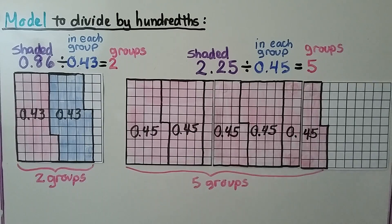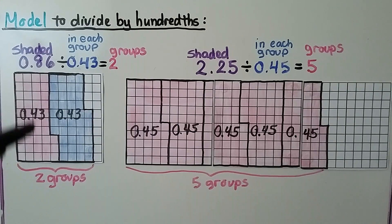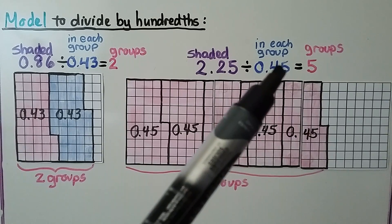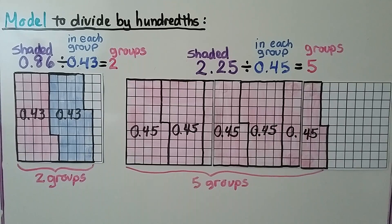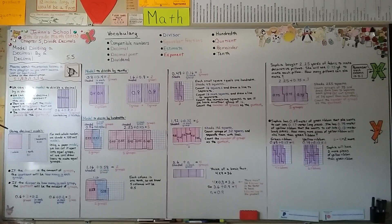Remember: when you have a decimal, if it says 43 hundredths, you count out 43 little squares; if it says 45 hundredths, you count out 45 little squares. In our next lesson, 5.6, we're going to learn how to place the decimal point in the quotient when we divide a decimal by a decimal.